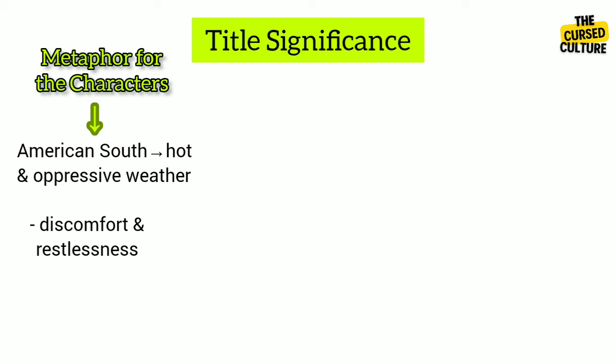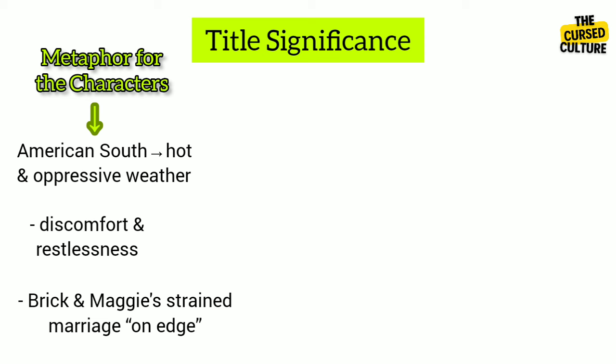The characters, particularly in Brick and Maggie's strained marriage, are figuratively on edge, struggling with their desires and inner conflicts, which creates a palpable sense of unease and pressure throughout the play.